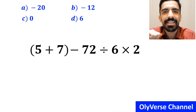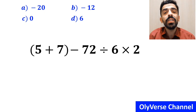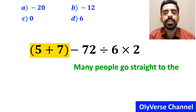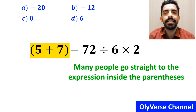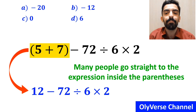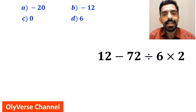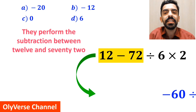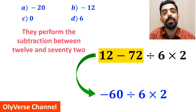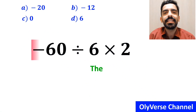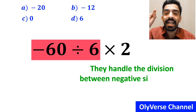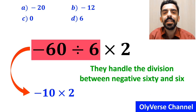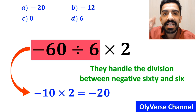Let's take a closer look and solve it together. In the first step, many people go straight to the expression inside the parenthesis and simplify the whole expression to 12 minus 72 divided by 6 times 2. In the next step, they perform the subtraction between 12 and 72 and simplify this expression to negative 60 divided by 6 times 2. In the final step, they handle the division between negative 60 and 6, and rewrite this expression as negative 10 multiplied by 2, which eventually gives them the answer negative 20.